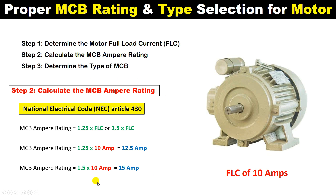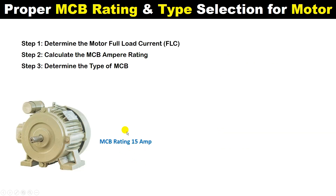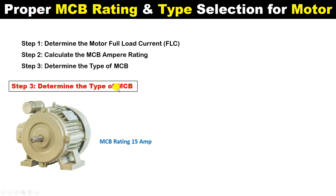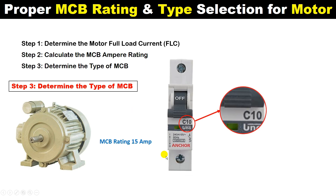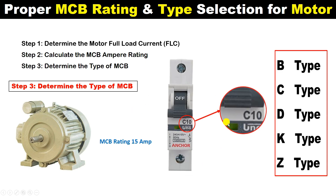For now let us assume that for this motor we have to use an MCB of 15 ampere. Now besides the MCB rating, we also have to select the type of MCB. As I told you in a previous video, it is important to use the correct MCB type for a motor — using the wrong type means your MCB will need to properly protect the motor.